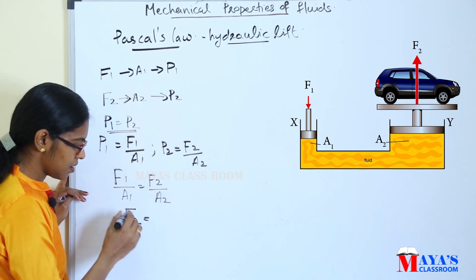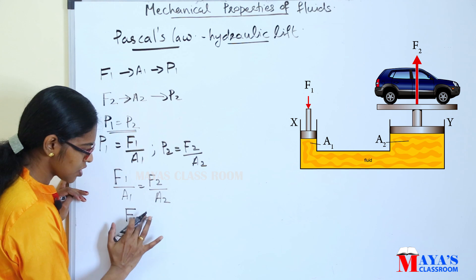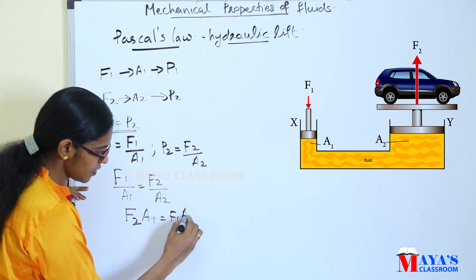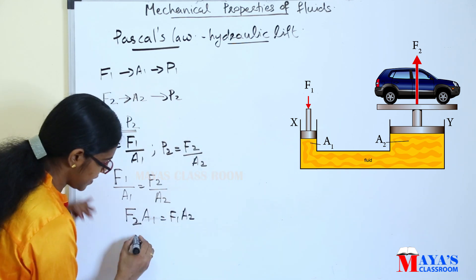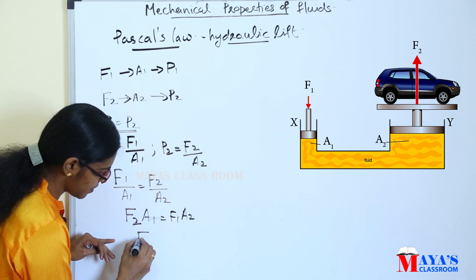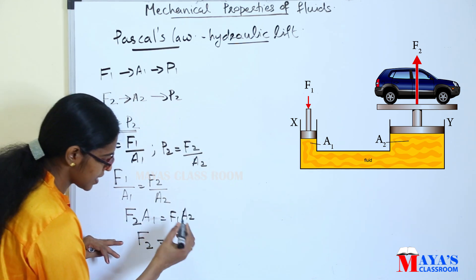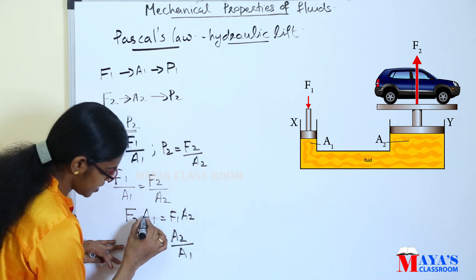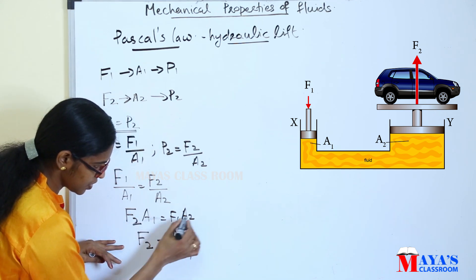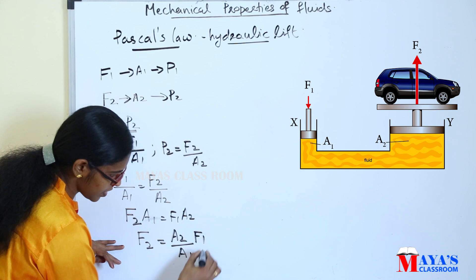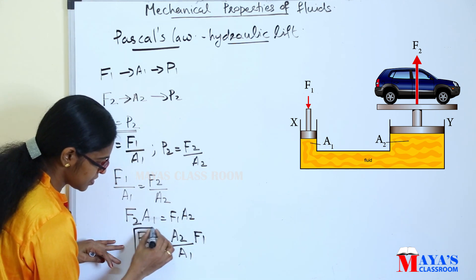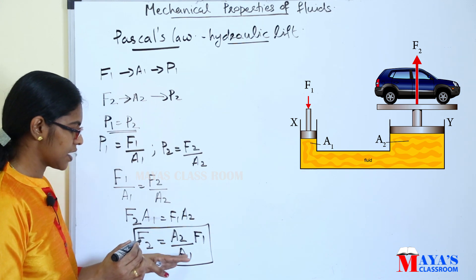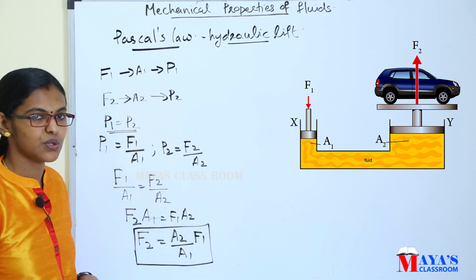Therefore F2 is equal to A2 divided by A1 multiplied by F1. This is the key formula for the hydraulic lift.